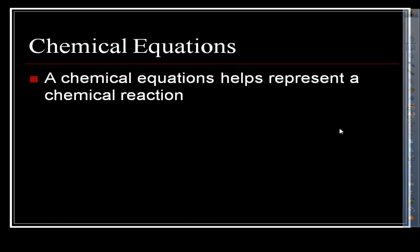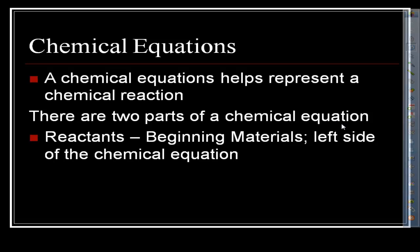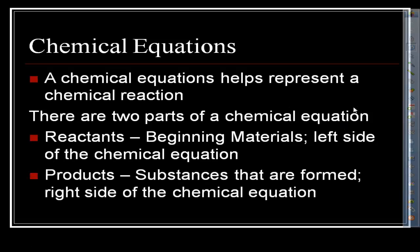Chemical equations help us represent what a chemical reaction looks like. The two parts of a chemical equation are the reactants and the products. The reactants are your beginning materials on the left side of the equation. The products are the substances that end up being formed on the right side. An arrow separates the left side (reactants) from the right side (products).